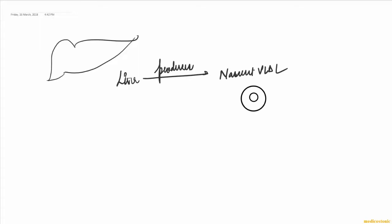Let's just make a pictorial diagram of liver. The liver produces nascent VLDL. Now this nascent VLDL looks something like this: it has a central core and an amphipathic shell.